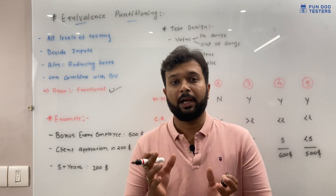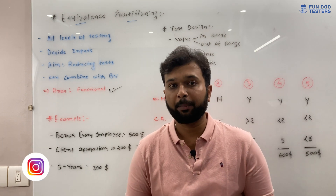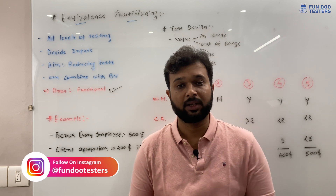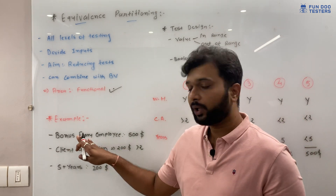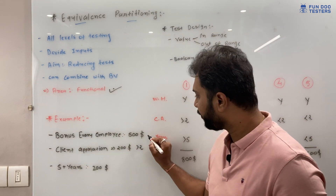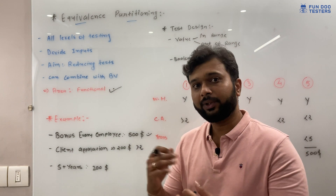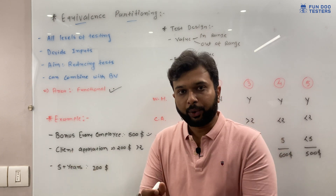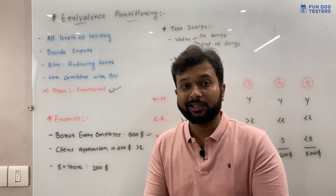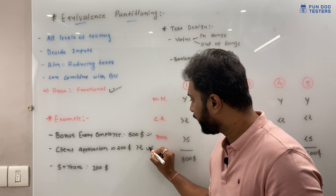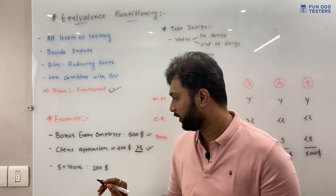Let's understand with a real-time example. Say the application is an employee or HR software. Based on year completion, each employee will get a yearly bonus. By default, every employee gets $500 as a yearly bonus on top of their CTC or salary. In a particular year, if that employee received any client appreciation or product appreciation, they will get an extra $200 — the condition being more than two client appreciations.